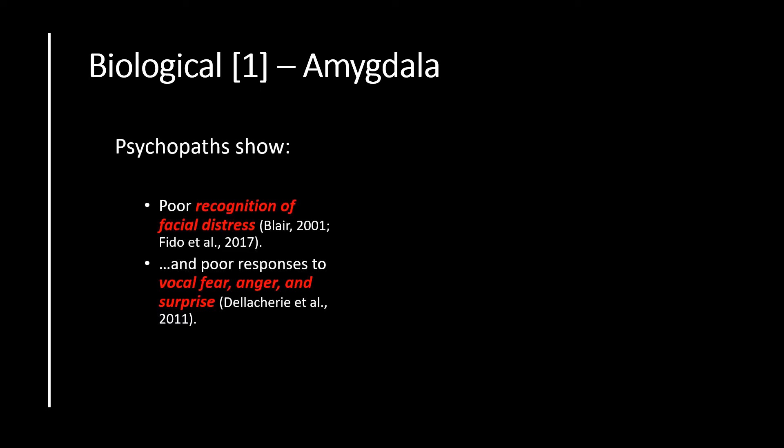The amygdala is also a part of the brain which underpins our survival instinct and allows us to fight, flee or freeze in a situation. The research pertaining to the relationships between the amygdala and psychopathy is vast. Key pieces of research have historically shown that psychopaths show poor recognition of facial distress — i.e. fear and sadness — and also poor responses to vocalised fear, anger and surprise. No matter how this emotion is presented to psychopaths, they have an inability to recognise and react to the emotional expressions of others.